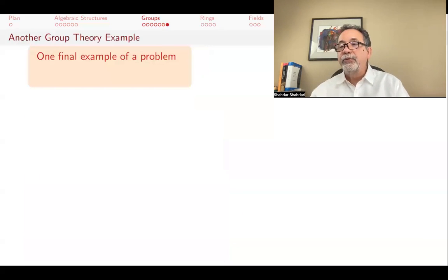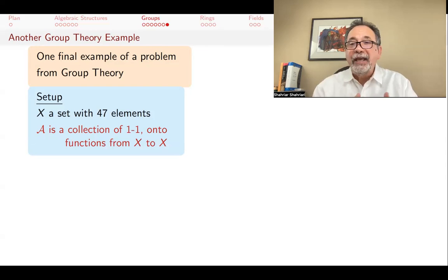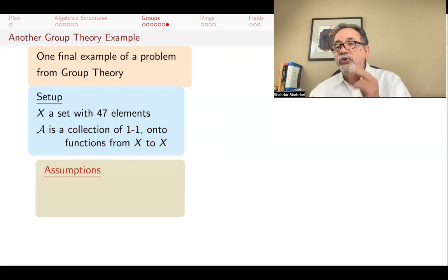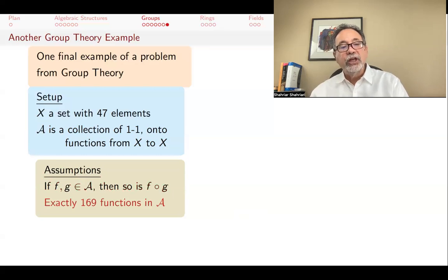Here's a final example of a problem that we can solve using group theory. Say that you have a set with 47 elements. Now script A is a set, but its elements are one-to-one onto functions, bijections from x to x. And you assume that you know two things about this set of one-to-one onto functions. You know that given functions in your collection, their composition is also in your collection. If f and g are in your collection, then f circle g is also a function in your collection.